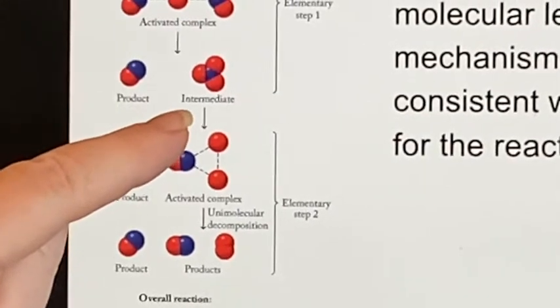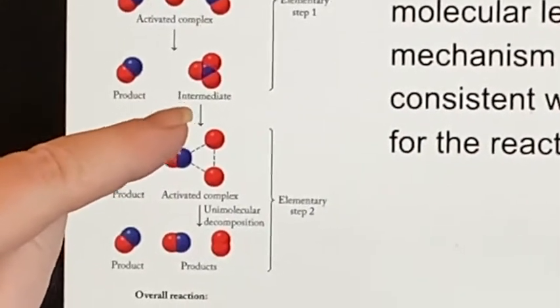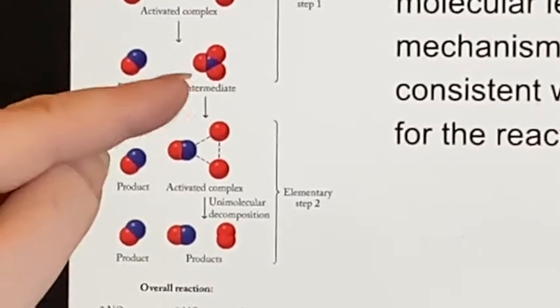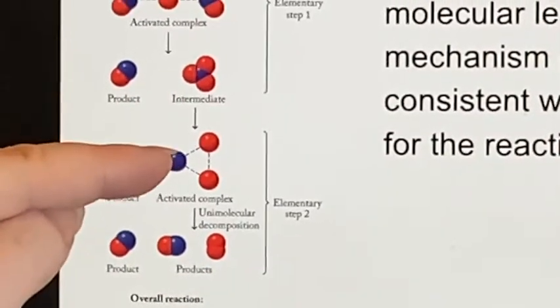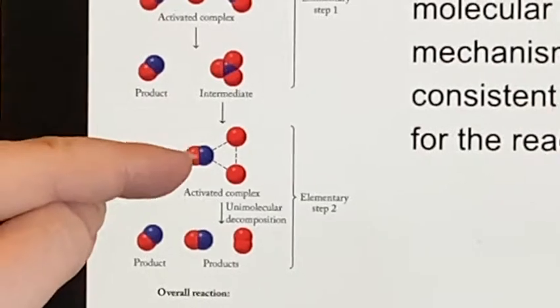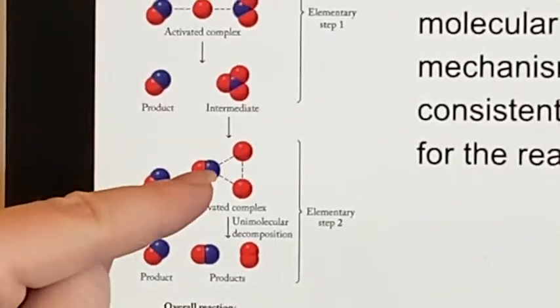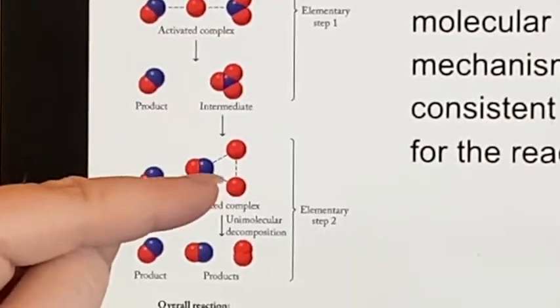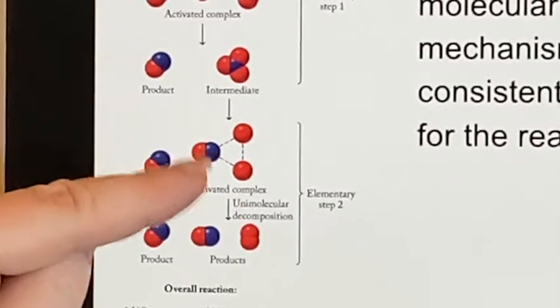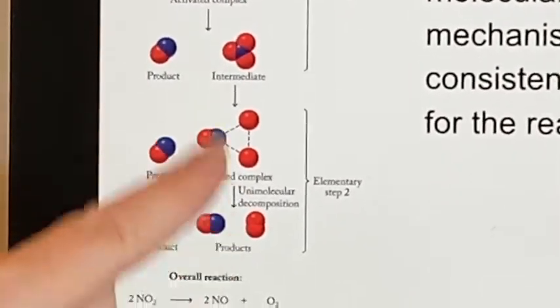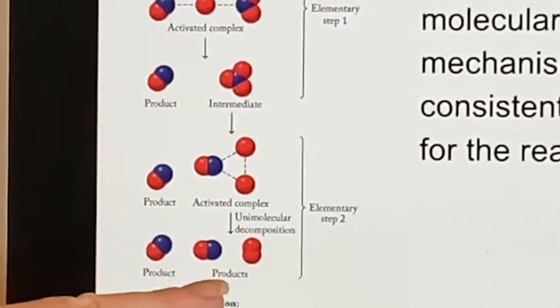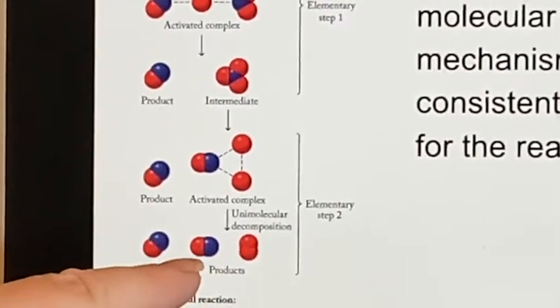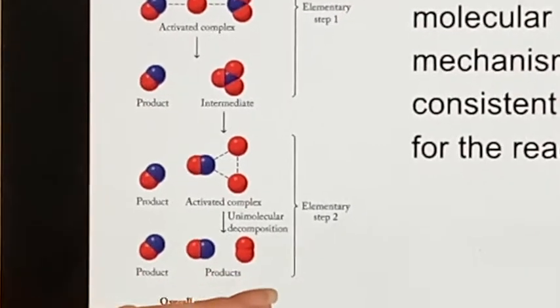In this case, it will now proceed to the second elementary step. In a unimolecular reaction, it simply comes apart. So it's losing two oxygens, but then those two oxygens recombine. So we had a unimolecular decomposition, which took the nitrogen trioxide and made it into a nitrogen monoxide and the normal diatomic oxygen.